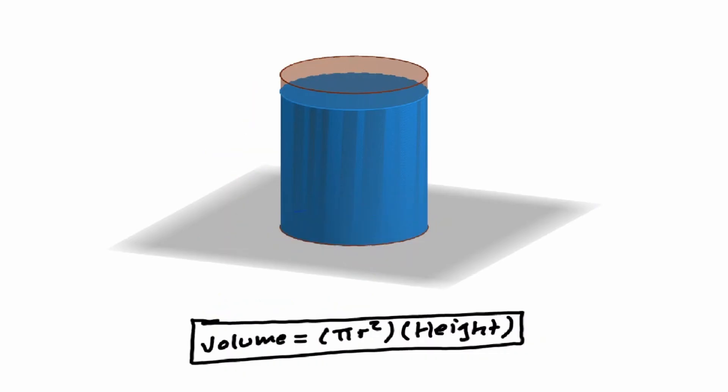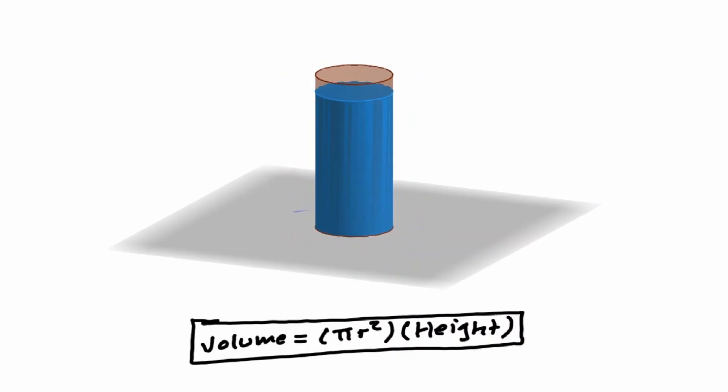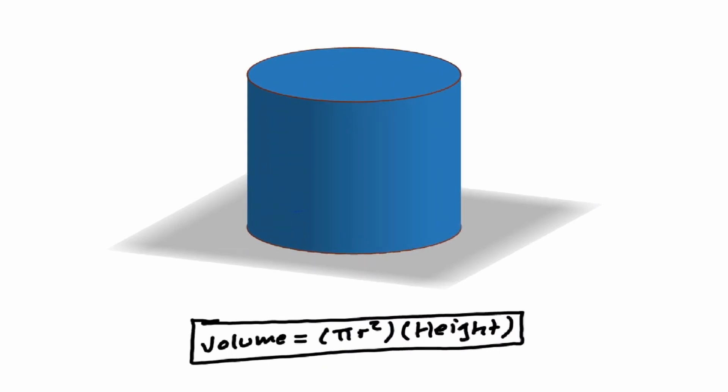And this remains true regardless of the dimension of the circle. If we consider a smaller circle on the base, all we're doing is just stacking smaller circles. So it is still the area of the base, which is the area of a circle, times the height that we need to consider. And it does not matter how small or how big our circle is in our base. The volume will be defined the same way.